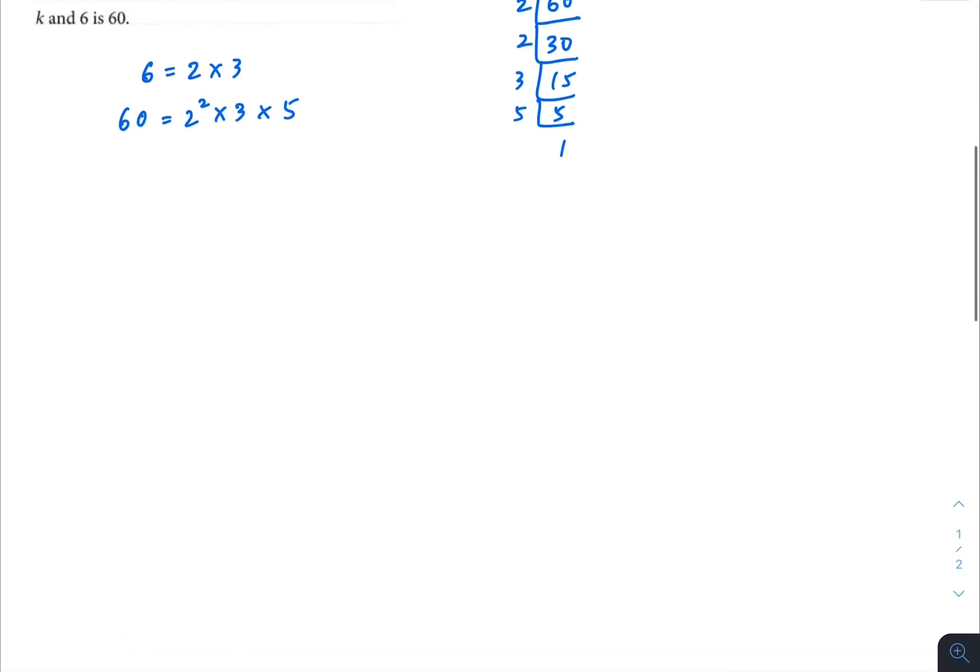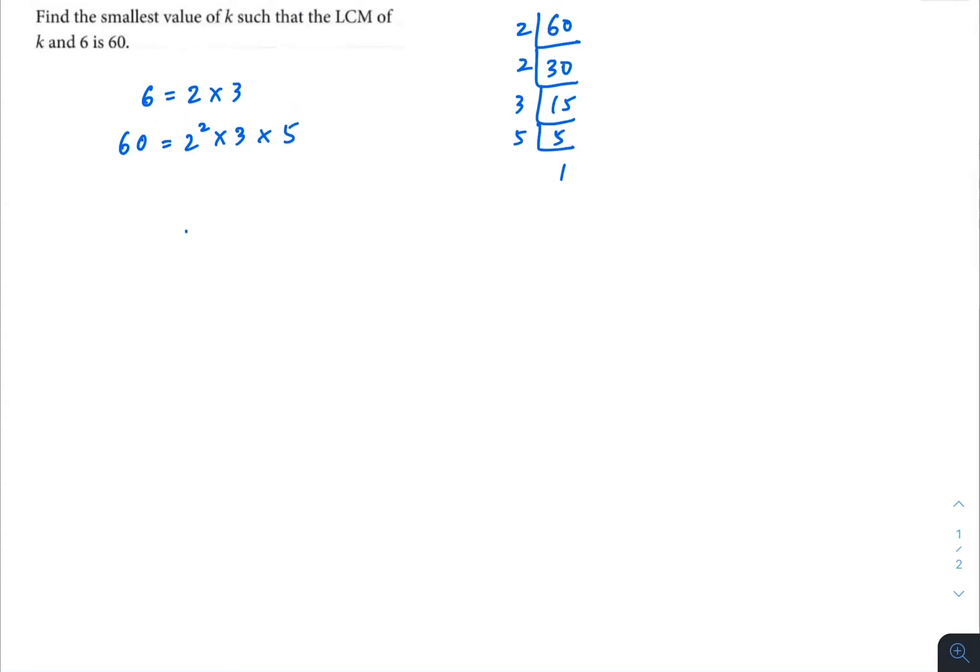Now let's rearrange this a bit. So our working space is going to be our unknown k and 6, and the LCM is going to be 60. So 6 is just 2 times 3. 60 will be 2 squared times 3 times 5.